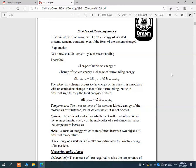What about the first law of thermodynamics? First law of thermodynamics states that the total energy of an isolated system remains constant even if the form of the system changes. For example, the total energy of the universe equals the energy of the system plus the energy of the surroundings. Therefore, any change that occurs to the energy of the system is associated with an equivalent change in that of the surroundings.